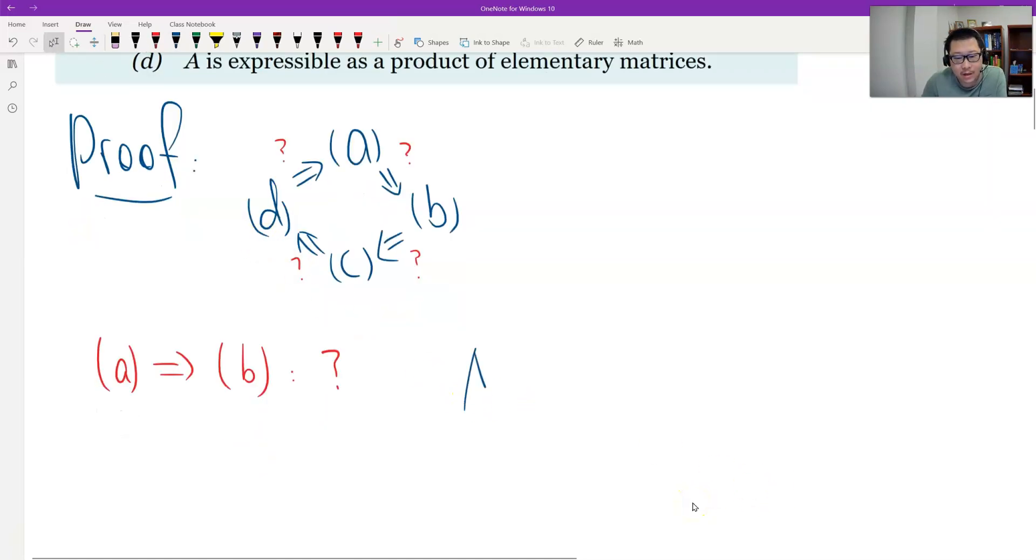Because Ax equals zero, therefore we can left multiply inverse of A. So inverse of A times A is I, so it disappears. So X equals zero. We get X equals zero, which means the only trivial solution. So that's good.